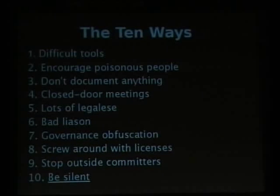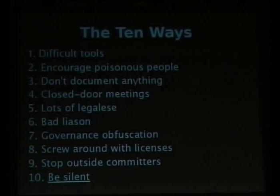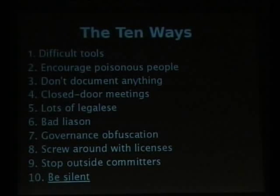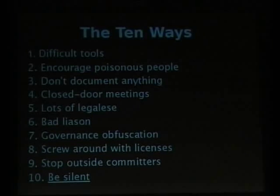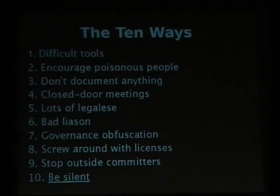So, a review of the ten techniques — ways to destroy and prevent community: difficult tools, encourage poisonous people, don't document anything, closed-door meetings, legalese legalese legalese, a bad liaison, obfuscate governance, screw around with licenses, stop outside committers, and be silent. When I was at Sun, we employed all of these techniques successfully. While Sun was a paragon of preventing community, they were hardly the only ones — I spoke to several members of the X.org consortium who claimed to be ten for ten. These techniques work for anybody. There are always the sunny Pollyanna-ish people in your company who think, wouldn't it be nice to have a community with people we could hang out with — and they actually want to do a completely different program. You have to be strong, say no, and work as hard as you can to prevent community, because every community person you turn away now will save you that much work later.